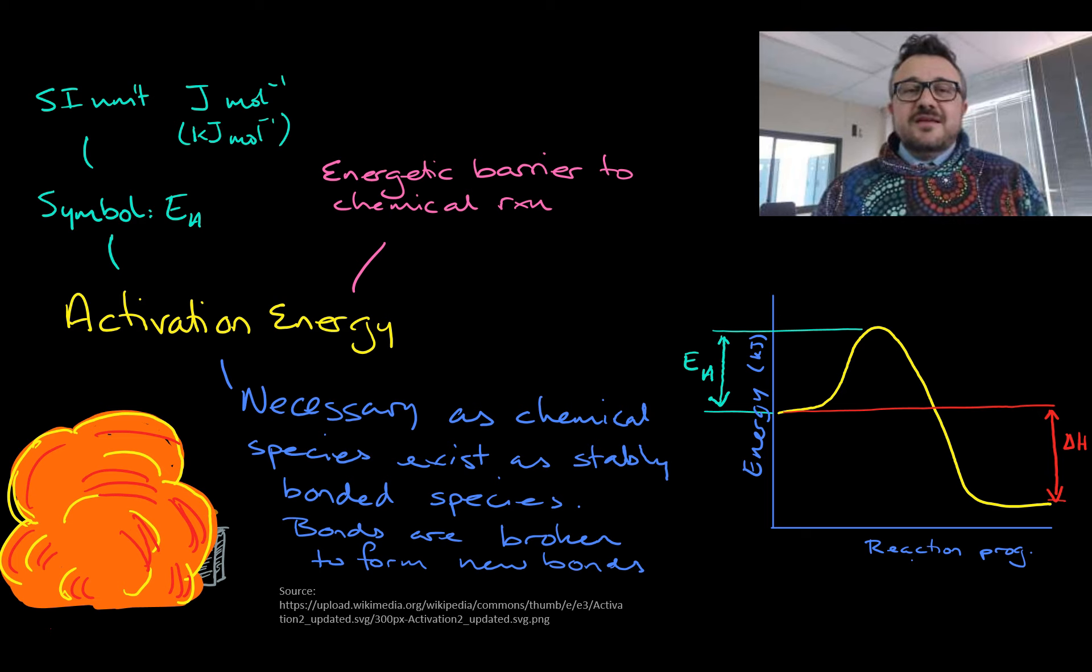It's necessary because basically chemical species will exist fairly stable. The bonds are already there, they're formed. And for a reaction to occur we need to break those bonds into our individual atoms and then allow new bonds to form.